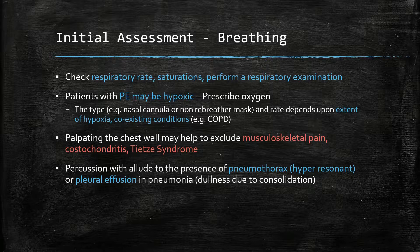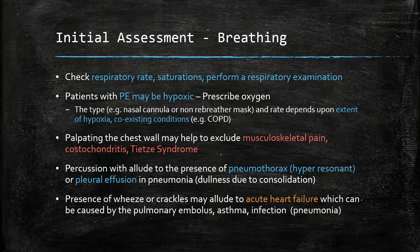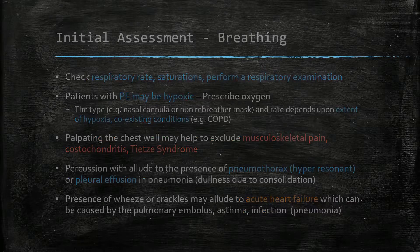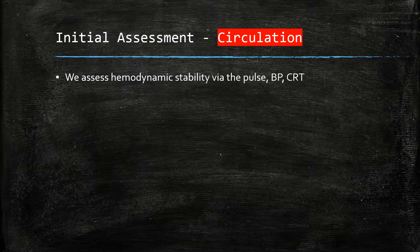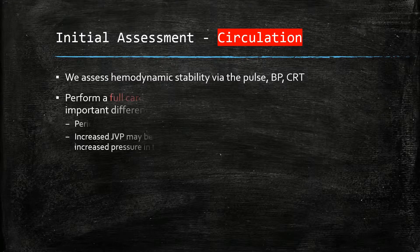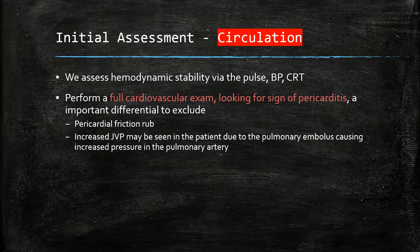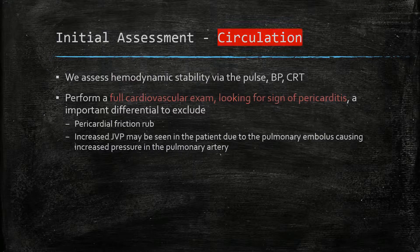Percussing as part of a full respiratory examination will allude to the presence of a pneumothorax or pleural effusion, being hyper-resonant or dull respectively. If wheeze or crackles are heard, this may point towards acute heart failure — which may be caused by the PE itself — or asthma or infection. Circulation: we assess haemodynamic stability via the pulse, blood pressure, and capillary refill time, and perform a full cardiovascular exam. We can look for pericarditis via a pericardial friction rub, and an increased JVP may be seen due to the pulmonary embolism causing increased pressure in the pulmonary artery.